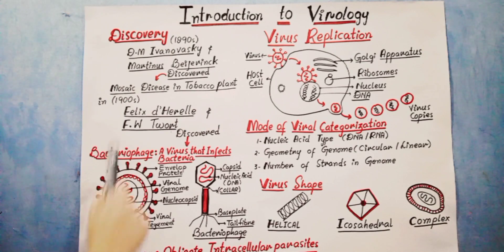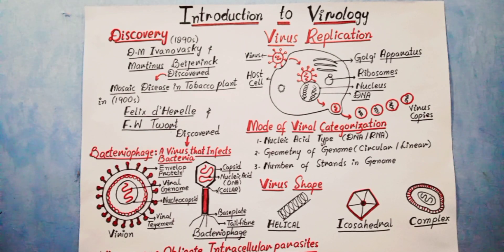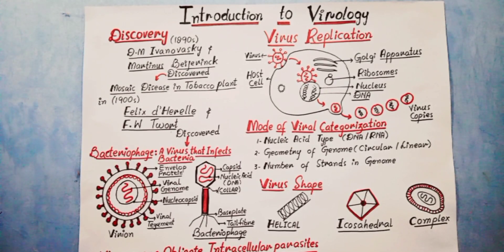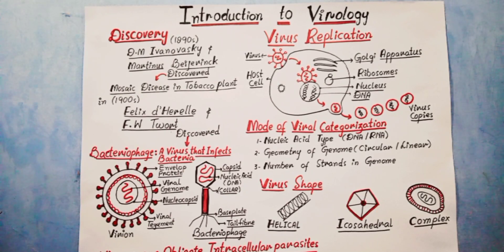The disease caused by this agent is called mosaic disease. The infectious agent was too small and cannot be seen by a light microscope. One more interesting thing about that agent is that it can only be grown in media which contain living cells.